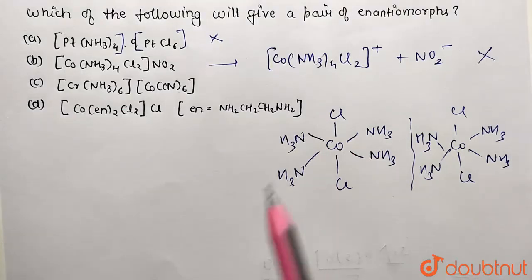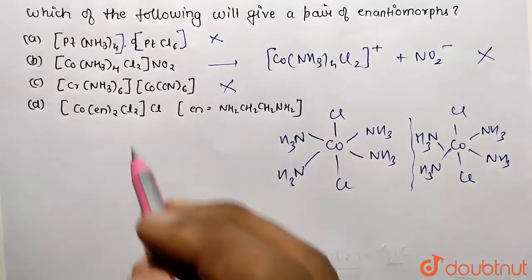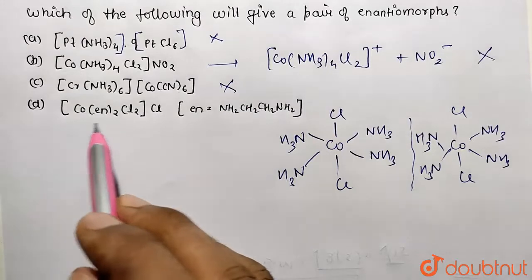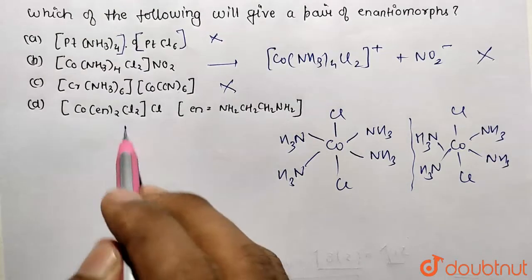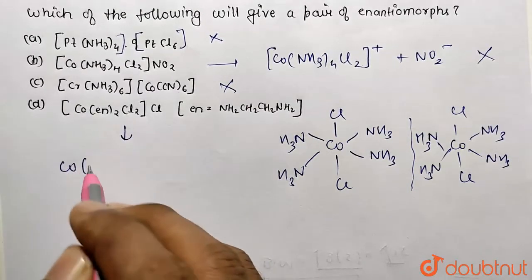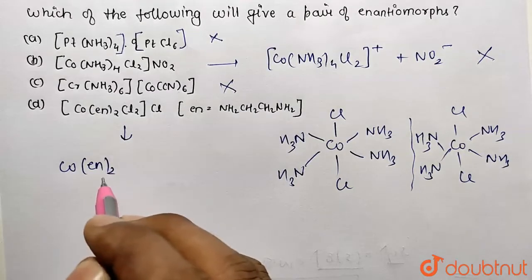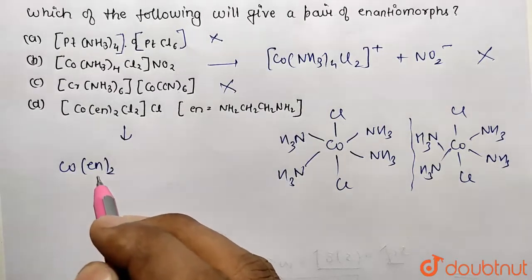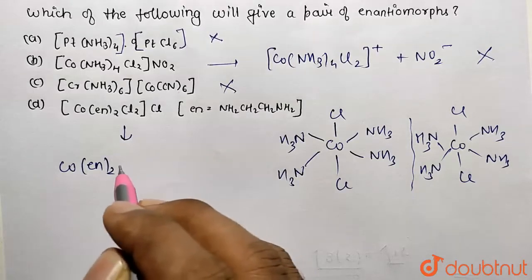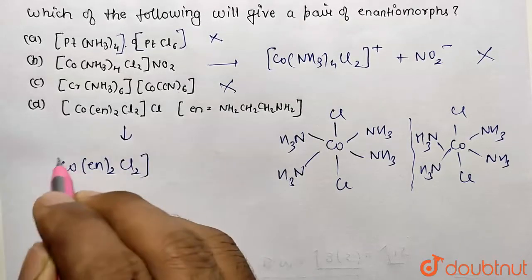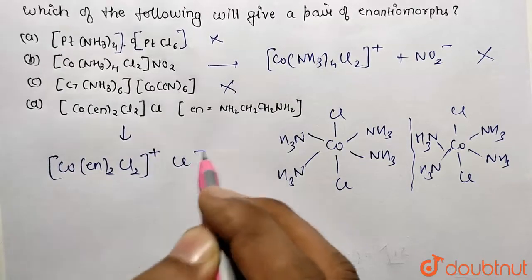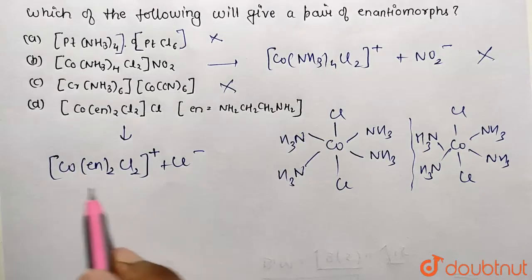Lastly, we are left with Co(en)2Cl2. So first of all, if I ionize this compound Co(en)2Cl2, where en is representing bidentate ligand, that is our ethylene diamine, so this is going to be Cl2, and upon ionizing it's going to give this type of set. So we need to check for